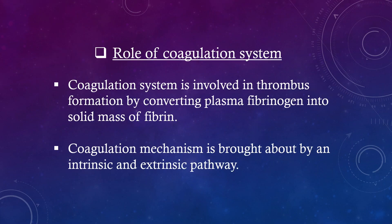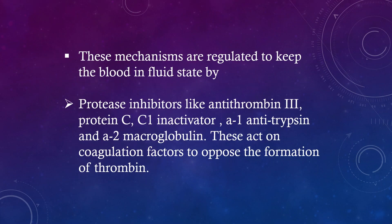Role of coagulation system: The coagulation system is involved in thrombus formation by converting plasma fibrinogen into a solid mass of fibrin. Coagulation is brought about by intrinsic and extrinsic pathways. These mechanisms are regulated to keep blood in a fluid state by protease inhibitors like antithrombin-3, protein C, C1 inactivator, alpha-1 antitrypsin, and alpha-2 macroglobulin, which act on coagulation factors to oppose thrombin formation.